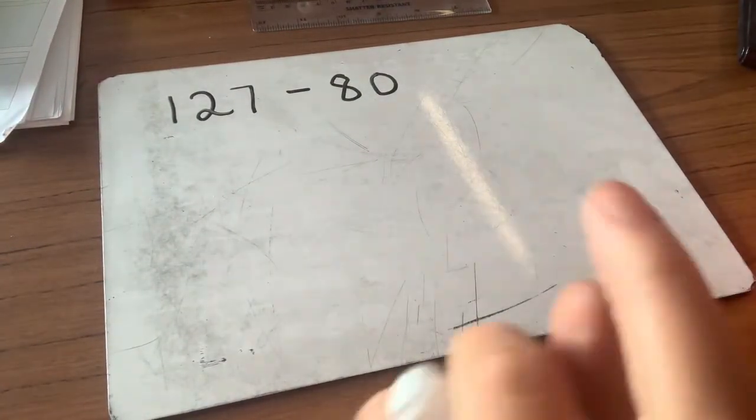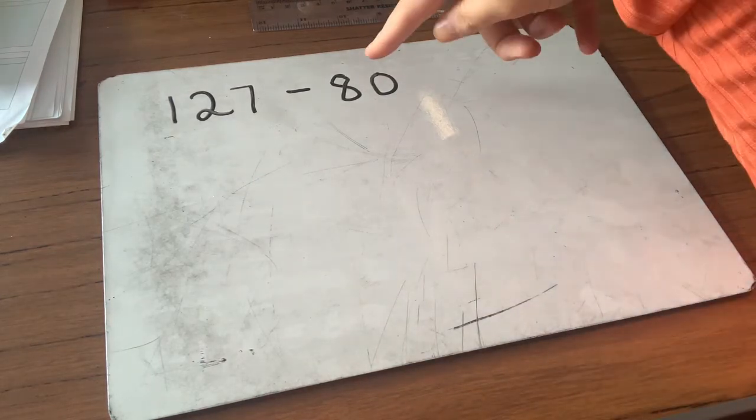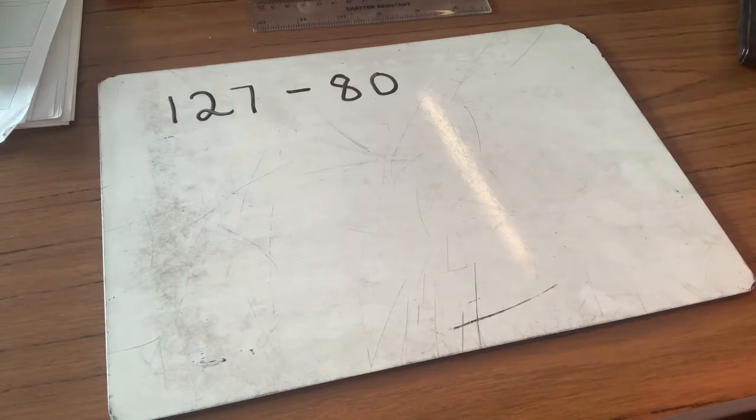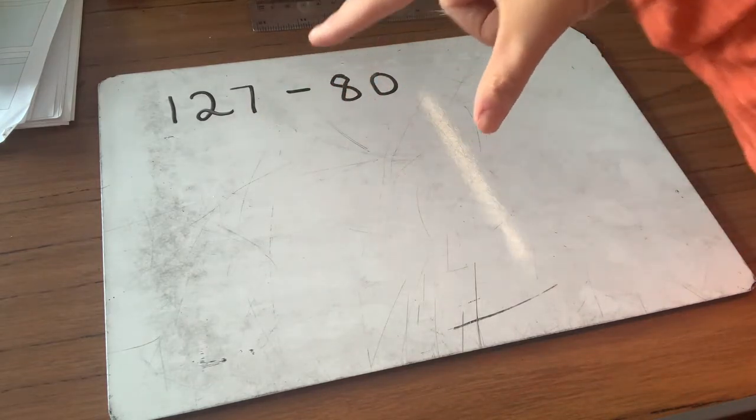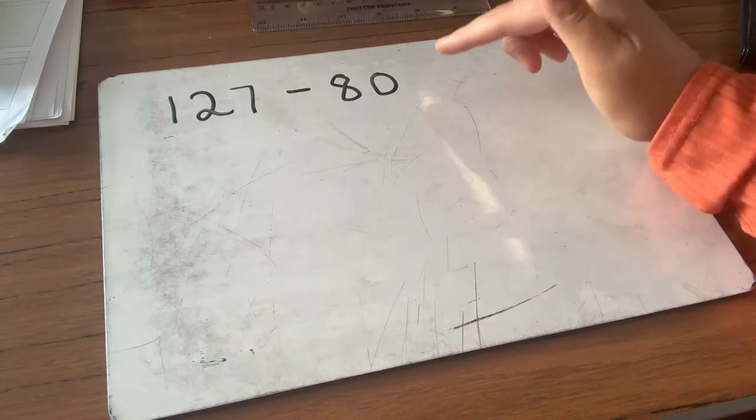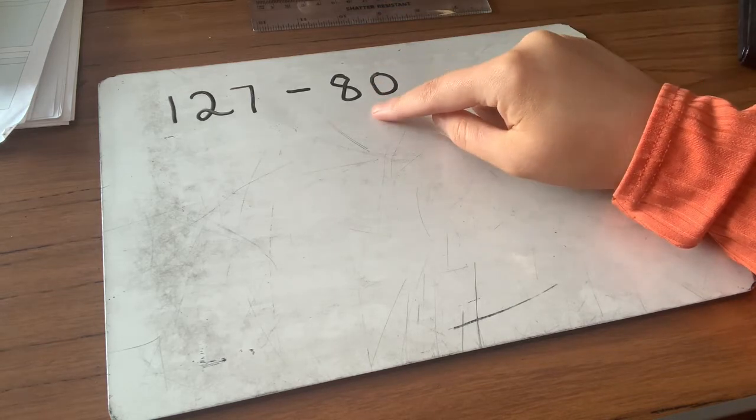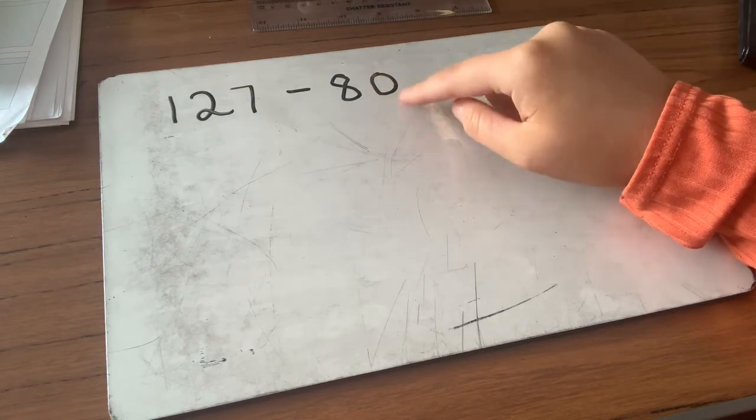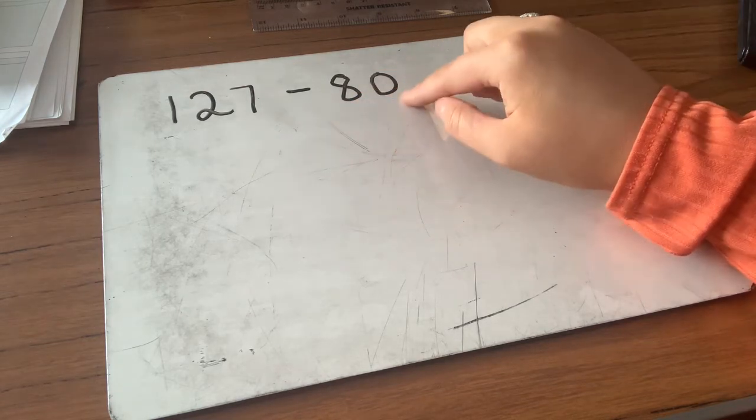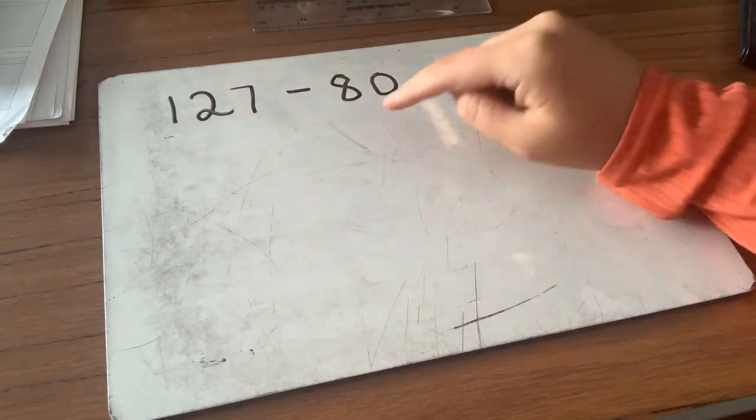Today we are going to be looking at our subtraction counting on method again. Just a reminder for Samson, we're using an add on up method to get to the next number. A few people did find this tricky last week, though lots of you did a really fab job, so hopefully you'll improve your score this week. For Samson, we are adding on, and we start off normally by adding on the units to the next 10. But the numbers this week are already at a 10, so we don't need to do the first step. We just need to count on from 80 up to 127.